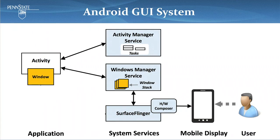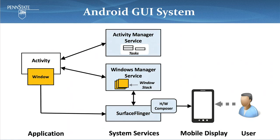On the left, we have the application process with activity and window instances. In the middle, we have different system services including Activity Manager and Window Manager Services, which are responsible for managing all activities and windows in the system. We also have SurfaceFlinger, which is a daemon process responsible for composing all window surfaces in the system to a frame buffer so it can be rendered on screen in the next refresh cycle. SurfaceFlinger also offers shared memory with the application, such that a window can directly draw contents into shared memory, which will later be written into the frame buffer.